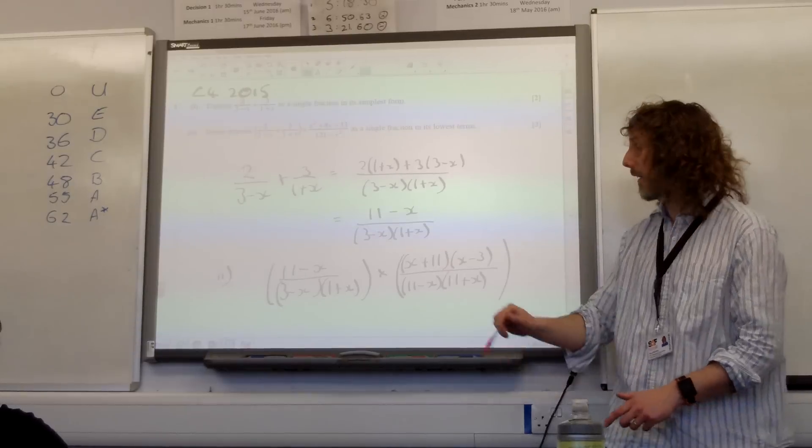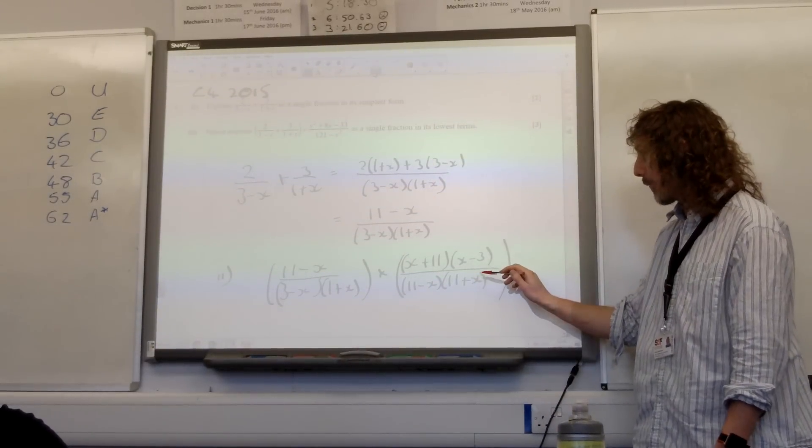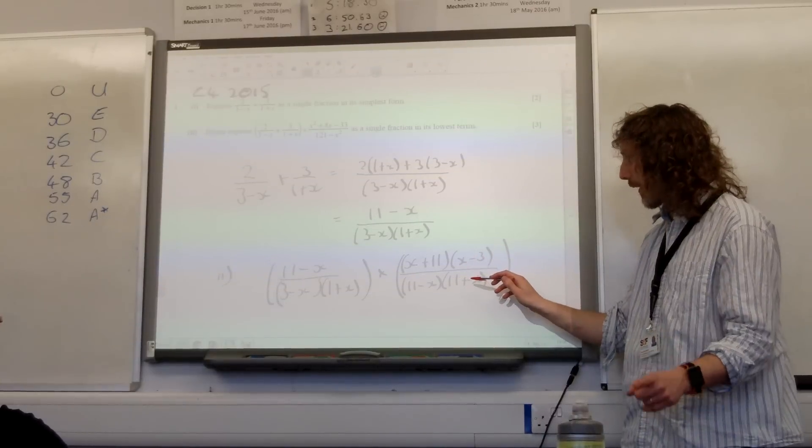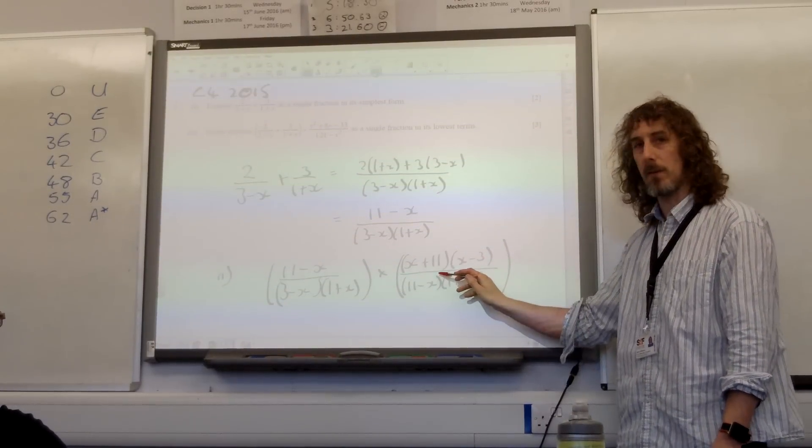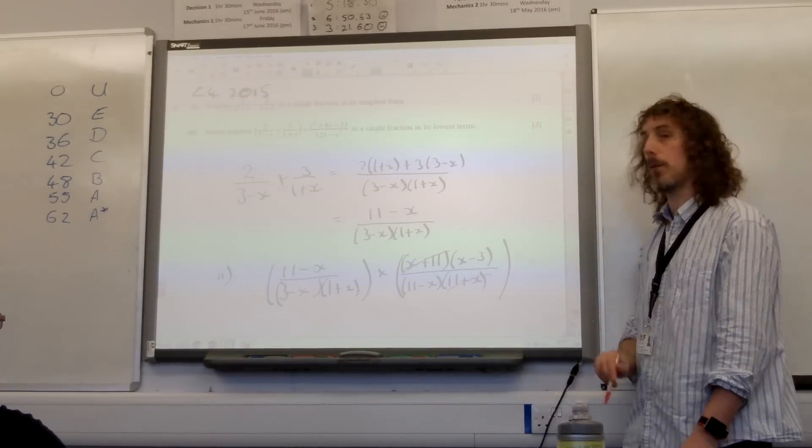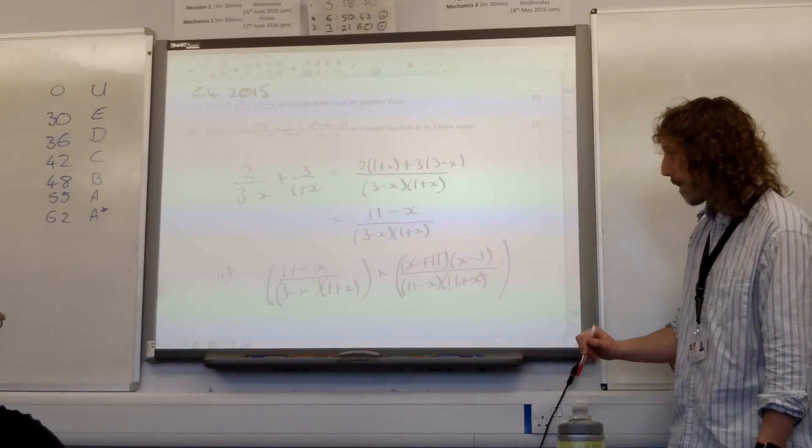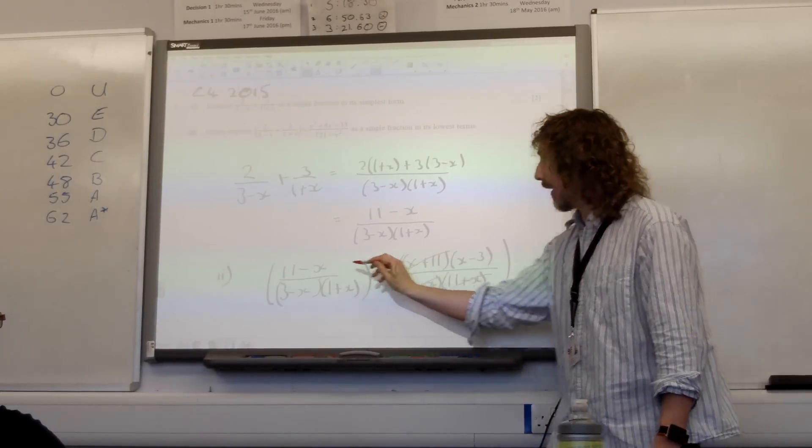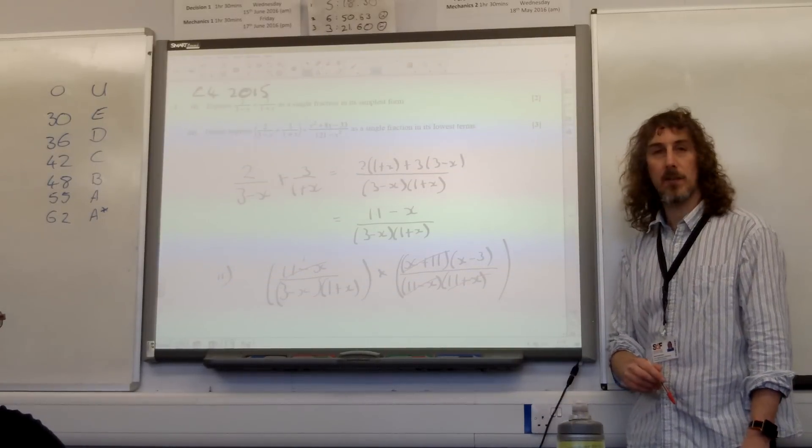Now we can start eliminating common factors. So we have, what do we have? We've got, now careful this, we've got 11 plus x and x plus 11. They are the same thing, so we're going to cancel out those at the bottom. We've also got 11 minus x and 11 minus x. These are 1, isn't it? So we can cancel those out.